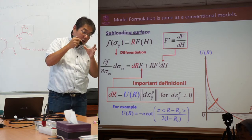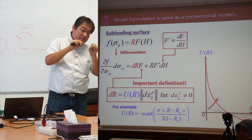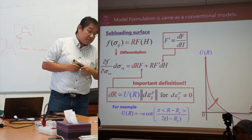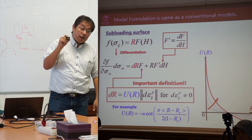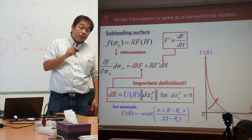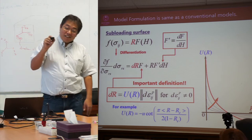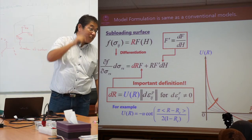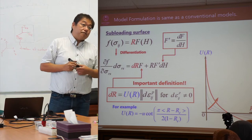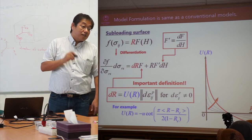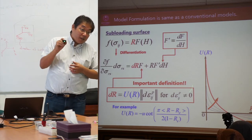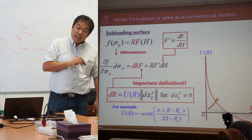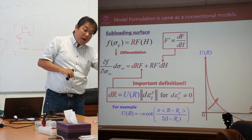When plastic deformation occurs, the inner surface must approach the outer surface — that is a very important point. We introduce the function U(r). If U(r) is always infinite, then dr is infinite, which means this function has no meaning — and the model reverts to the previous conventional one.